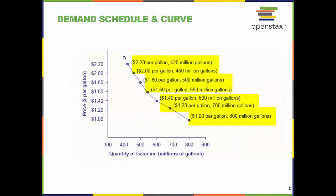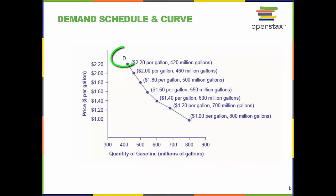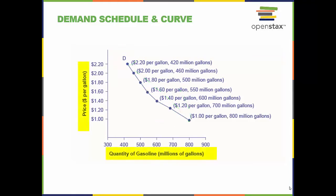The demand schedule shows that as a price rises, quantity demanded decreases, and vice versa. These points are then graphed and the line connecting them is the demand curve D. The downward slope of the demand curve illustrates the law of demand — the inverse relationship between prices and quantity demanded.